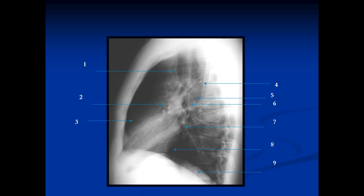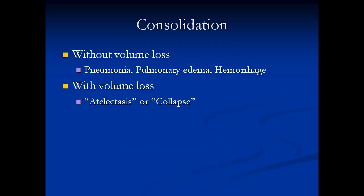I want you to look at the spine as well. If you go down the spine, you'll see that it gets blacker from the top to the bottom — this is normal. When you have an area of consolidation, this will change. Finally, you look at the retrosternal space — the retrosternal space should be uniformly black.